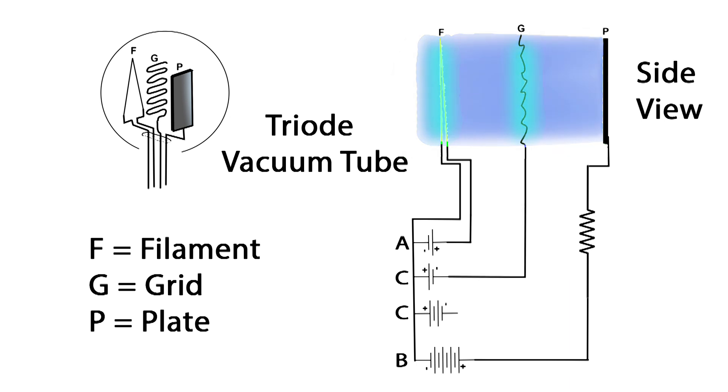Now here, we have this same battery, but I have now hooked up the first C battery. And notice that the electrons flowing from the filament to the plate is less. Let's go back to the other slide and take a look at that. See, the electrons are darker, which means a lot more of them. And now when we go back to the slide where we have first hooked up a battery to the grid, you can see that the electrons are not flowing as much.